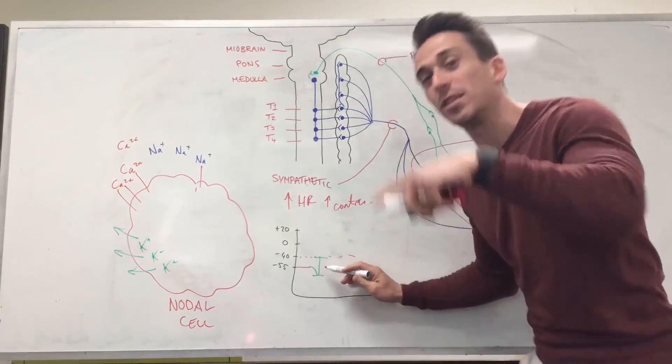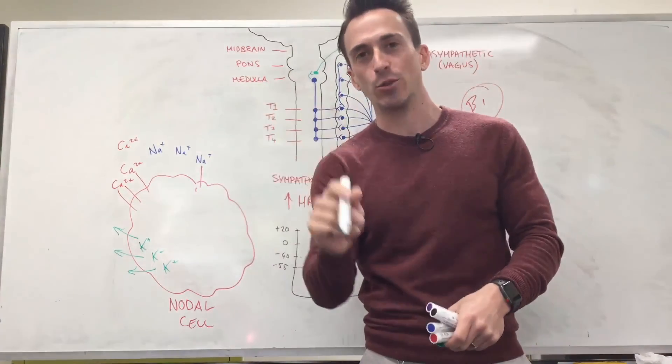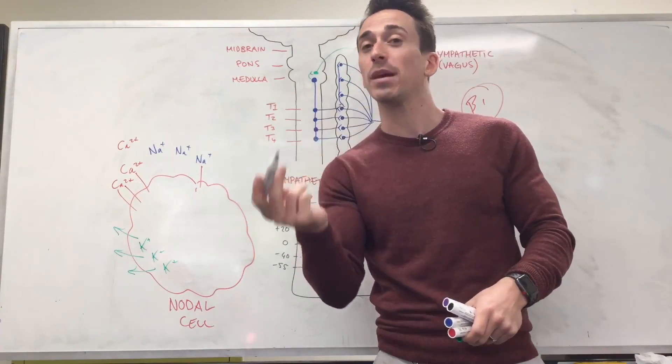So this is how the central nervous system tells the heart to speed up or slow down.